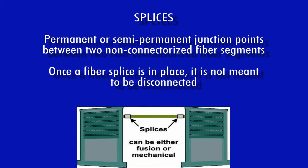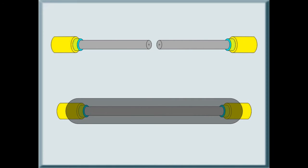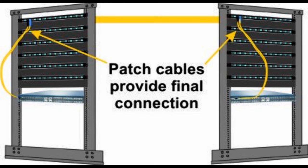Splices are permanent or semi-permanent junction points between two segments of non-connectorized optical fiber — once a fiber link is spliced, it is not meant to be disconnected. Splices can be one of two types: mechanical, where two bare fibers are brought together with index matching gel placed between them to eliminate the air gap, or fusion, where the two fibers are melted together with a device called a fusion splicer. Proper link design includes patch panels on both ends of the fiber link so that fragile optical fibers are not directly connected to active equipment; instead, ruggedized patch cables provide the final connection.